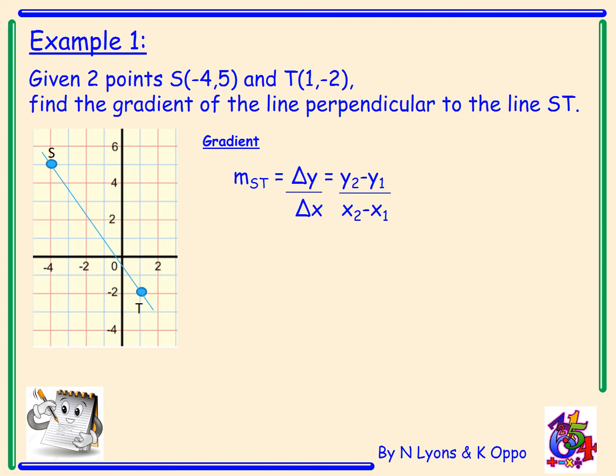So let's work out the gradient. So m of the line st. Now as you see I'm not using m1 or m2 anymore. I have to put it into the context of the question. I've been asked to find the gradient of the line st. So the gradient of line st is the change in y over change in x. y2 minus y1 over x2 minus x1. Now this is going to give me the gradient st equals negative seven over five. It's a negative gradient and that's what I was expecting.